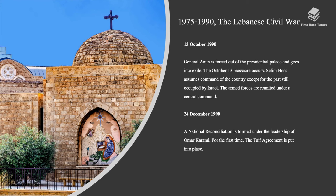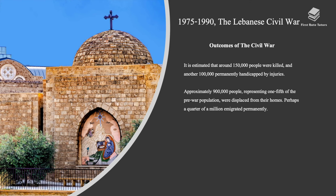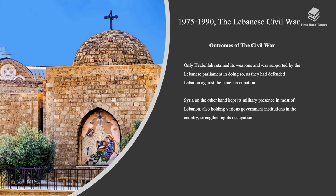On December 24th, 1990, a national reconciliation government was formed under the leadership of Omar Karami, and for the first time the Taif Agreement was put into place. Since the end of the war, the Lebanese have conducted several elections and most of the militias have been weakened or disbanded. The Lebanese armed forces extended central government authority over about two-thirds of the country. It is estimated that around 150,000 people were killed and another 100,000 permanently handicapped by injuries. Approximately 900,000 people — representing one-fifth of the pre-war population — were displaced from their homes, and perhaps a quarter of a million emigrated permanently. Only Hezbollah retained its weapons, supported by the Lebanese parliament, as they had defended Lebanon against the Israeli occupation.